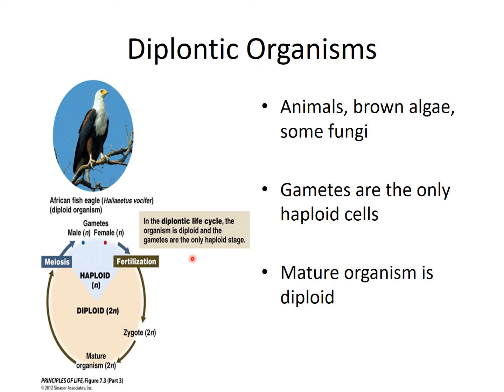In diplontic organisms, a good majority of the life cycle is diploid. Animals are diplontic organisms — you and I are diplontic. The only time you were ever haploid was when you were a sperm or an egg. As soon as sperm and egg fuse during fertilization, you became a diploid organism. A vast majority of your life cycle is spent in the diploid phase. These three life cycles describe where the organism spends most of its life.